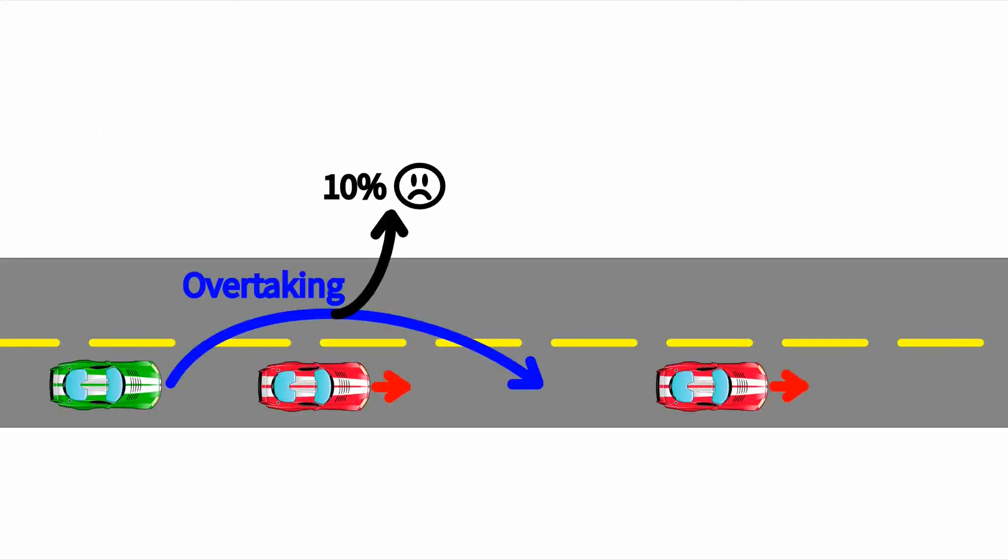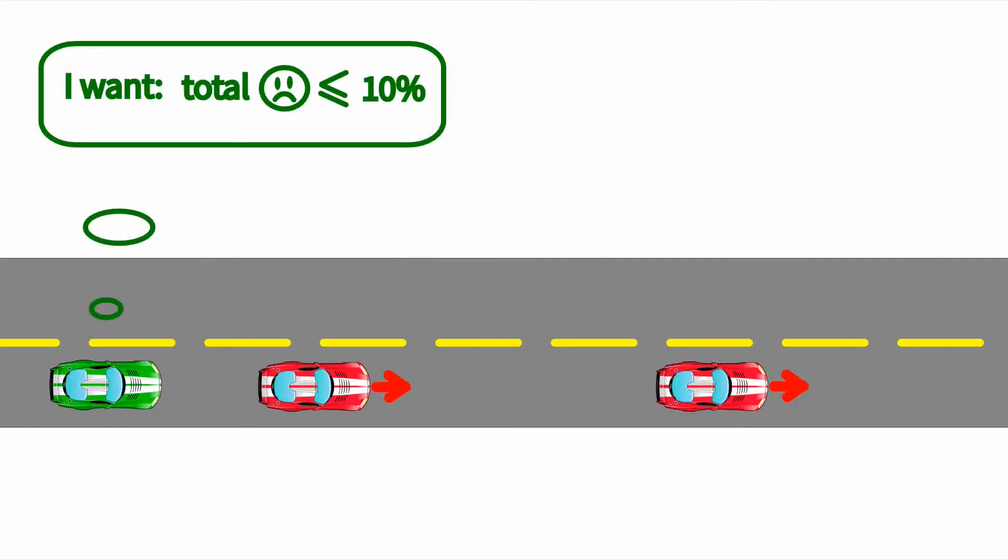To show this, consider a race car with two other cars ahead. Overtaking has a 10% chance of crashing, assume a maximum 10% allowable chance of crashing over the race.